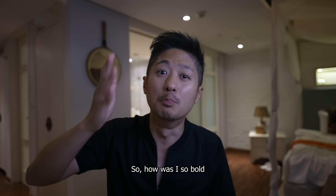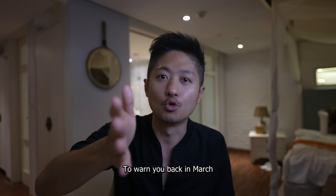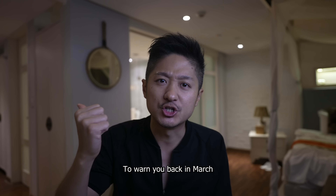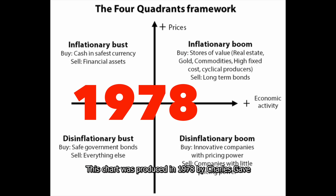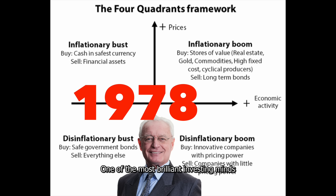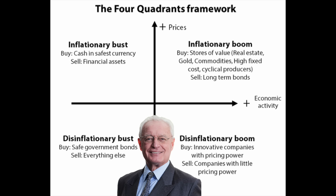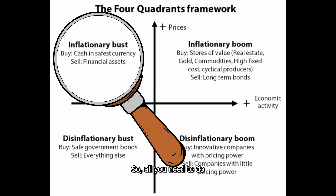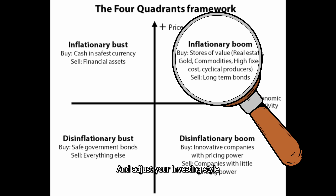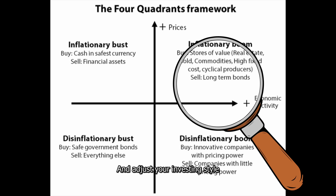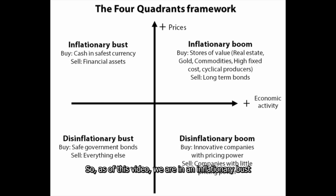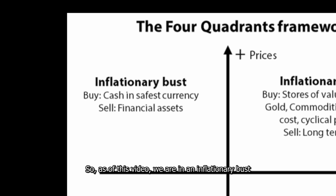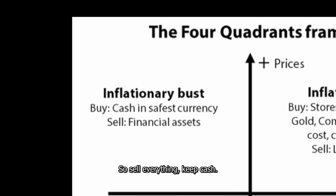So how was I so bold to warn you back in March? This chart was produced in 1978 by Charles Gave — one of the most brilliant investing minds. All you need to do is find the quadrant and adjust your investing style. As of this video, we are in an inflationary bust, so sell everything and keep cash.